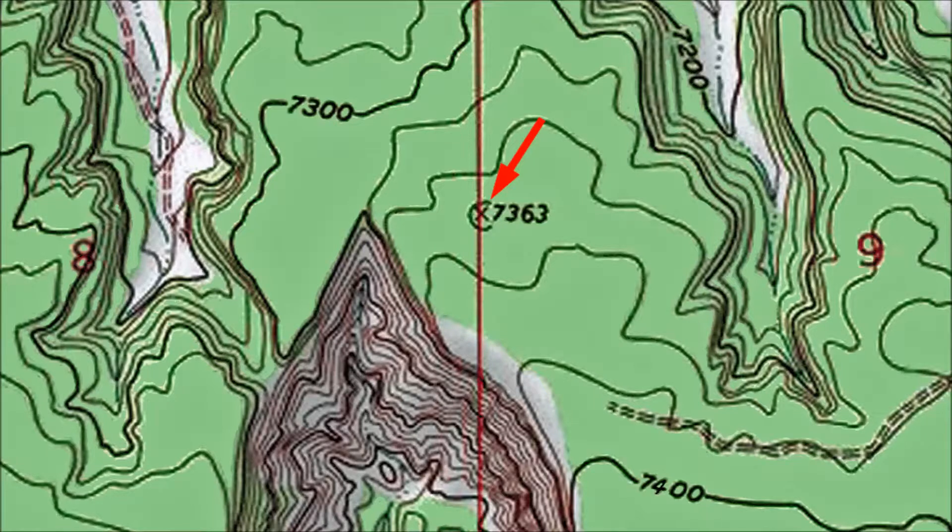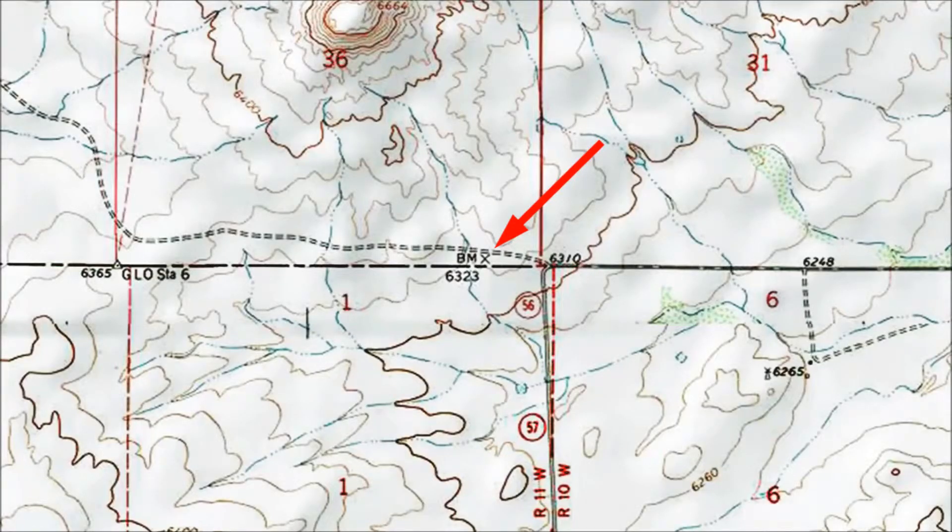The x does more than mark the spot. If there's an x on a topo map, when you get to that spot, you're likely to find some sort of marker on the ground. If you see an x with the elevation and the letters BM, that's a benchmark, or permanent survey marker. When you get there, you'll most likely find a circular bronze marker about the size of the palm of your hand set into the ground.